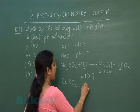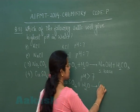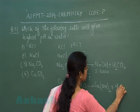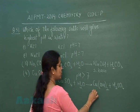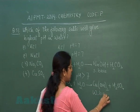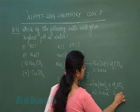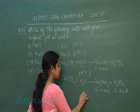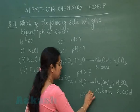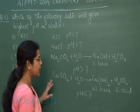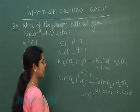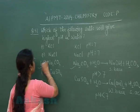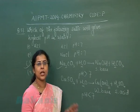The fourth option is copper sulphate. Copper sulphate hydrolyzes in water giving Cu(OH)₂ and H₂SO₄. Copper hydroxide is a weak base while sulphuric acid is a strong acid, so the acid dominates and the solution becomes acidic with pH less than 7. Therefore, the highest pH is observed for sodium carbonate — option 3 is correct.